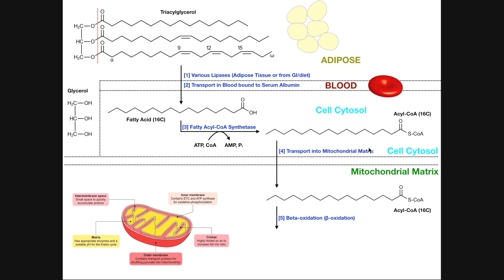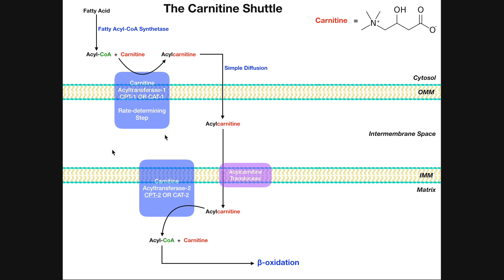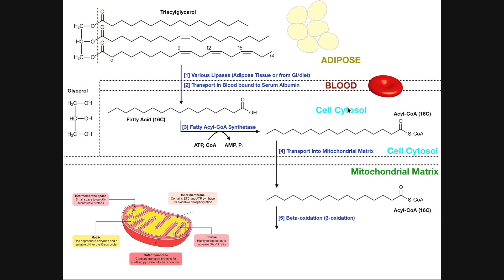Once we have this acyl-CoA, we can transport it into the mitochondrial matrix. Right now we're in the cytoplasm of the cell; inside is the mitochondrial matrix, and this is where beta-oxidation occurs. If we want to metabolize this acyl-CoA derivative, we have to get it from the cytoplasm into the matrix of the mitochondria. I'll just say it moves from the cytosol into the mitochondrial matrix — the acyl-CoA crosses both the outer and inner mitochondrial membranes. Beta-oxidation is a pathway where the cell metabolizes the acyl-CoA to yield acetyl-CoAs for energy, along with NADHs and FADH2s, which power the electron transport chain.